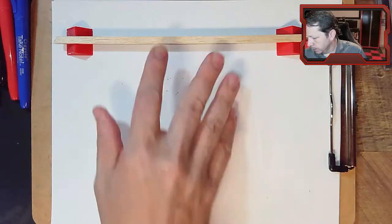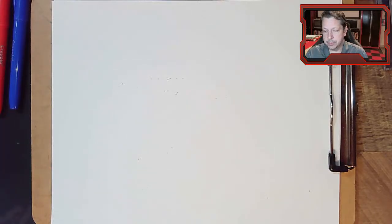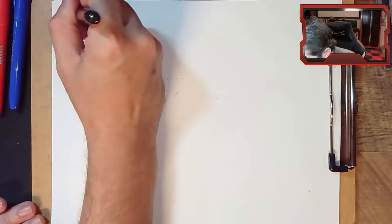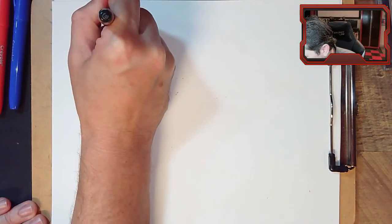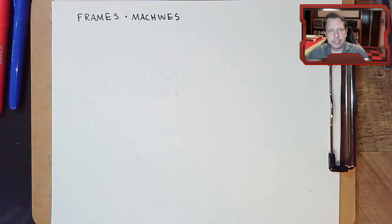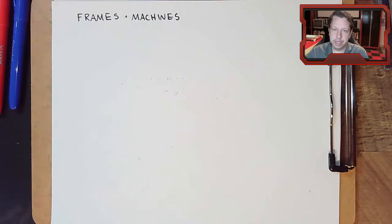What we're going to do today is introduce a new thing. Up until this point we have only been dealing with axial forces, whether they were in a truss member, on a plate, or the clevis and yoke type thing. We did all axial forces, and now we're going to introduce a new section where not every force is going to be axial — we're going to do that with the topic of frames and machines.